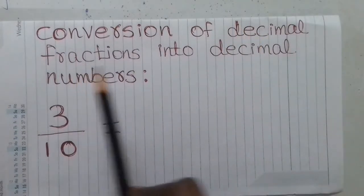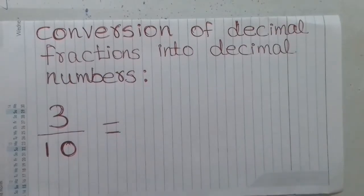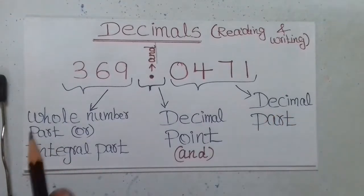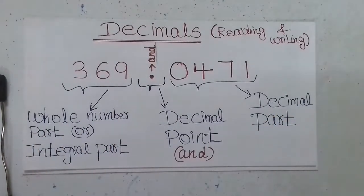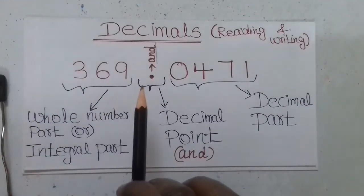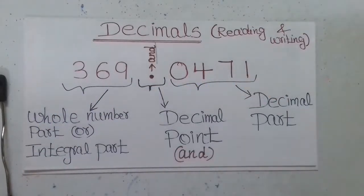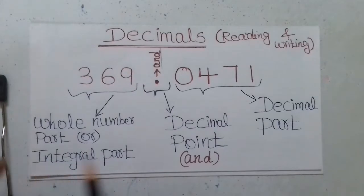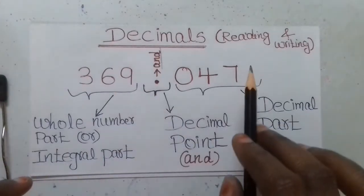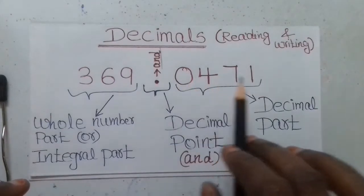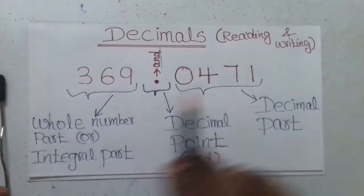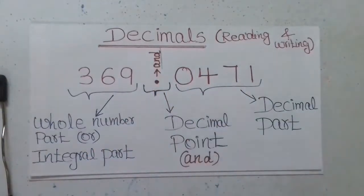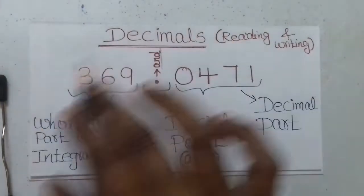Conversion of decimal fractions into decimal numbers. Decimal numbers consist of two parts: one is the whole number part, or integral part, and the other is the decimal part. For example, 369.0471 — to the left of the decimal point is the whole number part, and to the right is the decimal part, so 0471 is the decimal part.